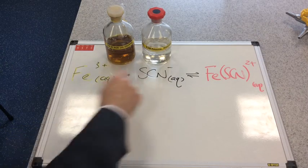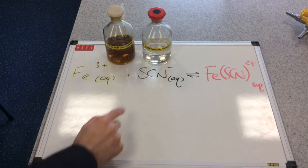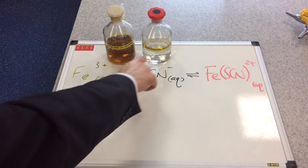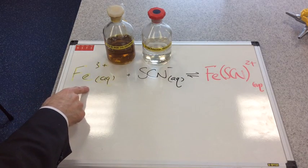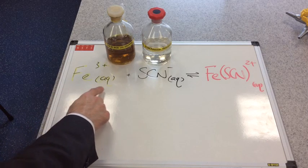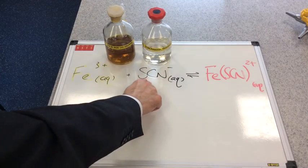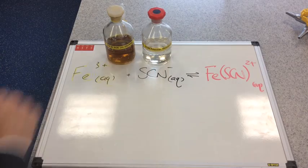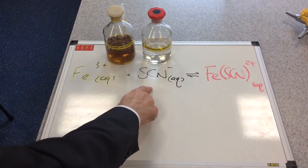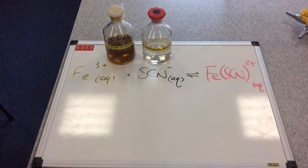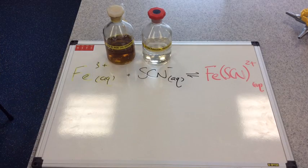You can see from the bottles themselves the iron 3 plus ions are a yellow color, and the thiocyanate ions are obviously colorless. As you'll see in a moment when you add these two chemicals together they produce this ion here and that is red in color.